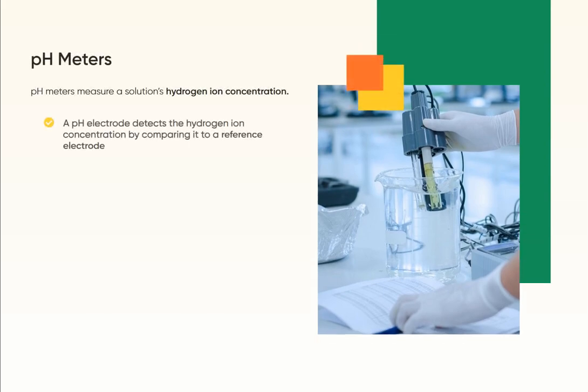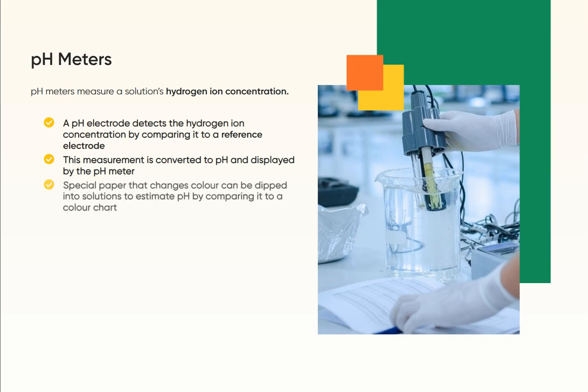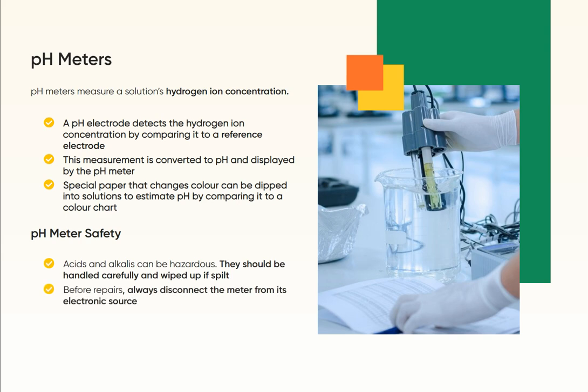pH meters measure a solution's hydrogen ion concentration. A pH electrode detects the hydrogen ion concentration by comparing it to a reference electrode. This measurement is converted to pH and displayed by the pH meter. Special paper that changes color can be dipped into solutions to estimate pH by comparing it to a color chart.